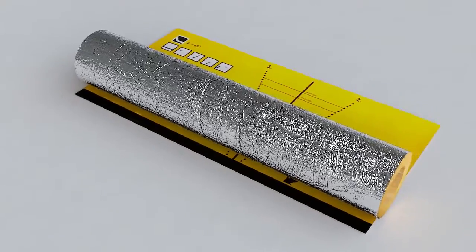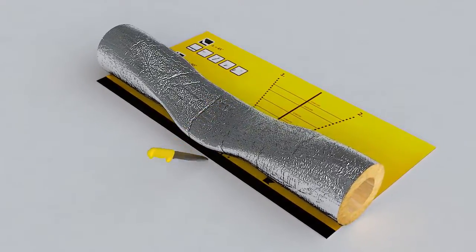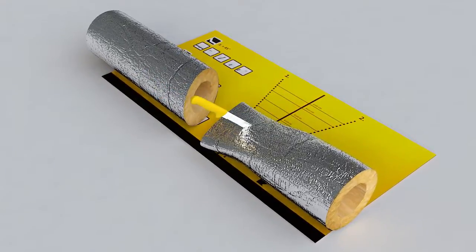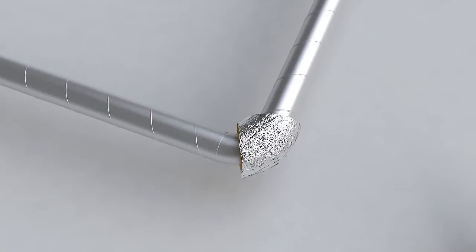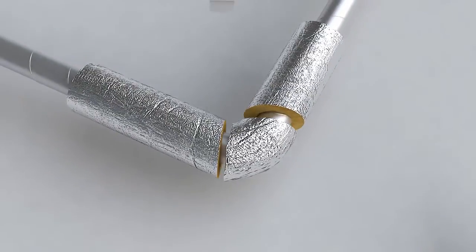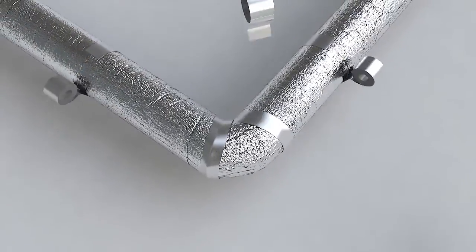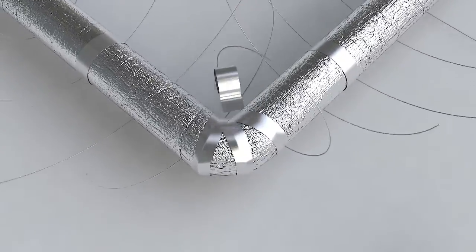When insulating a 90 degree angle, a separate angle piece is first cut from the product, following both of the packaging helplines. Then the corner piece is slipped into position and the remaining pieces of insulation are joined to it. Finally, the seams are taped and the insulation is firmly secured with binding wire.